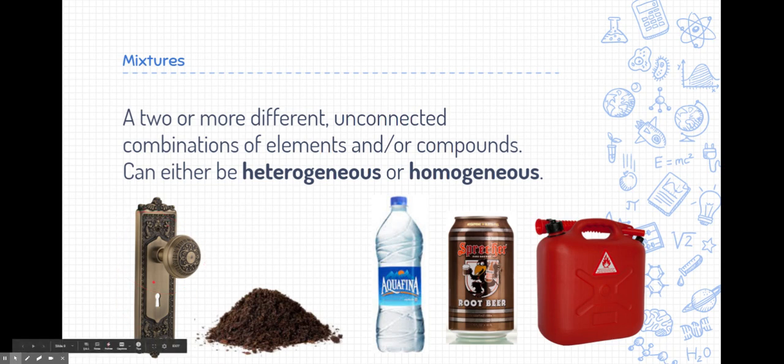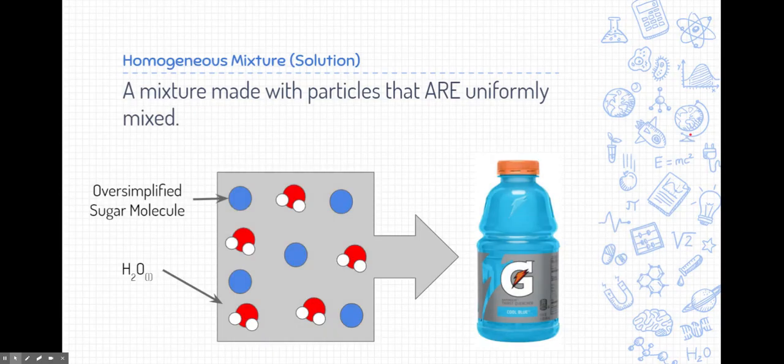Here's some examples of mixtures. Here's a brass doorknob made of different types of metals that are mixed together. Soil has lots of stuff in it. Water, and I'm talking bottled water, has water, but it also has minerals in it as well. Soda has a lot of things like water and sugar and other stuff. And then gasoline has additives in it.